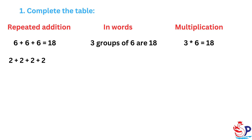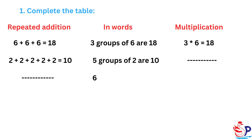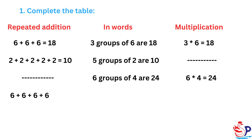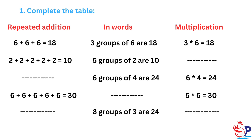6 groups of 4 are 24; 6 times 4 equals 24. 6 plus 6 plus 6 plus 6 plus 6 plus 6 equals 30; 5 times 6 equals 30. 8 groups of 3 are 24. 8 plus 8 plus 8 plus 8 equals 32.